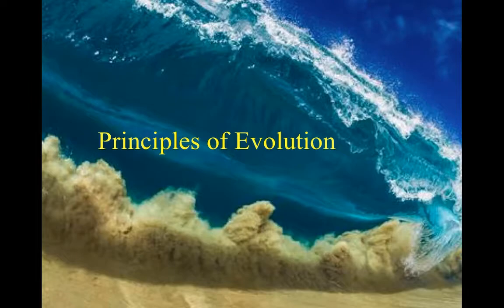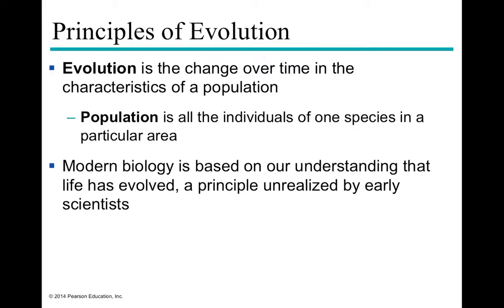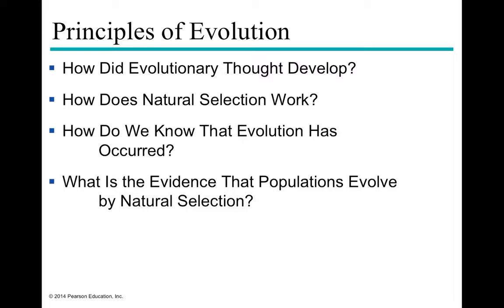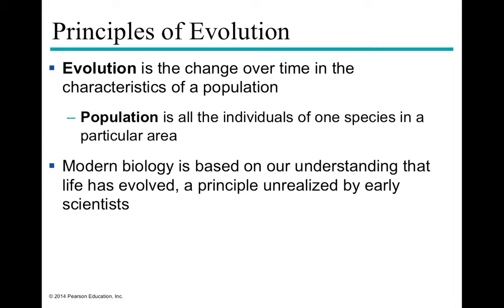Welcome back to Chaminade University. Today we're going to cover Unit 11, where we'll discuss principles of evolution. We'll talk about how evolutionary thought began to develop, the process of natural selection, how we're able to tell what evolution has occurred, and the evidence that populations evolve under natural selection or selective pressure from their environment.